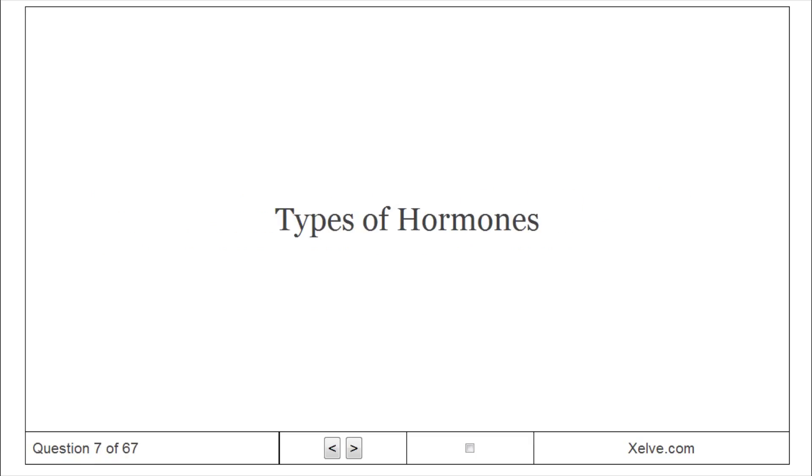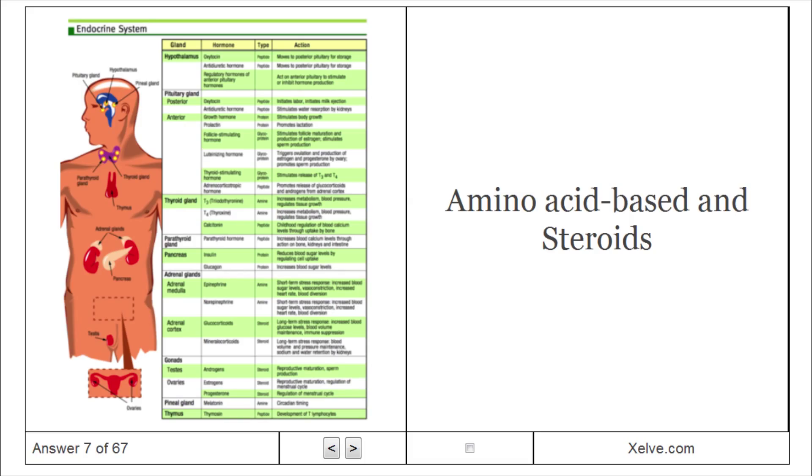Types of hormones: amino acid based and steroids.